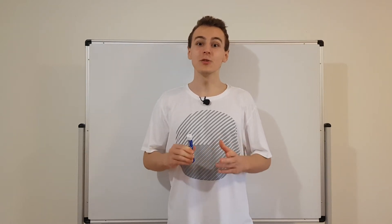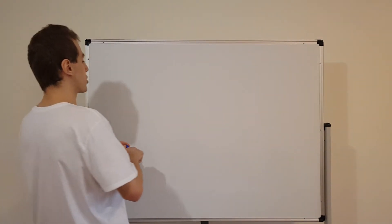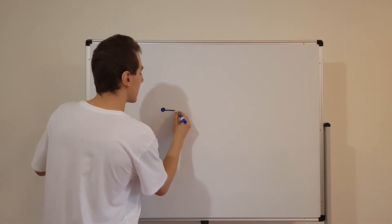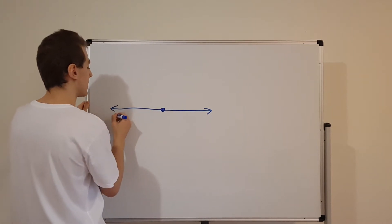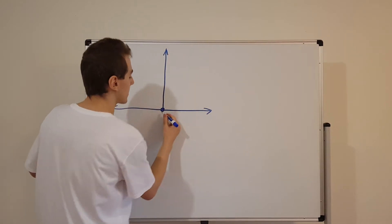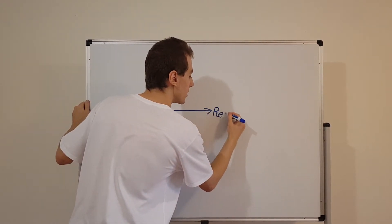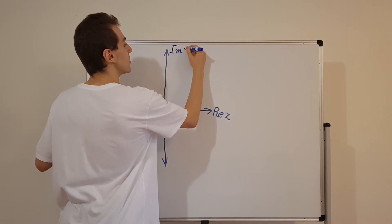Let's describe complex numbers using Cartesian coordinates. I'm going to start off by drawing a diagram of the complex plane. We're going to have the origin, and through the origin we're going to have the horizontal axis, which is actually the real axis, and the vertical axis is going to be the imaginary axis. I'm going to label this as the real component of a complex number z, and this is going to be the imaginary component of a complex number z.